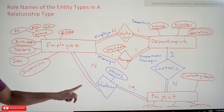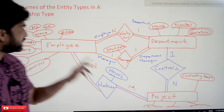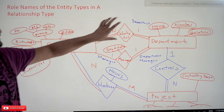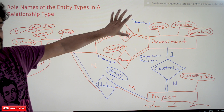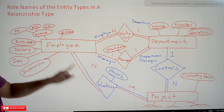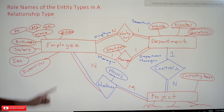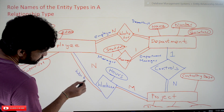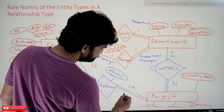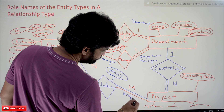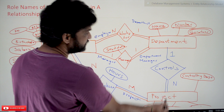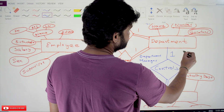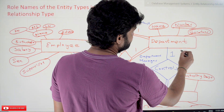The same employee in a different relationship type has a different role. The role name of employee with respect to 'works on' is 'worker'. And for project in 'works on', it is just 'project'. Similarly, if you take department and project with respect to 'controls', it is 'controlling department'.